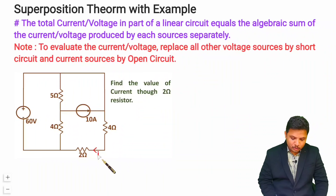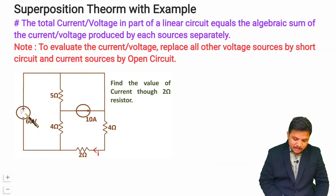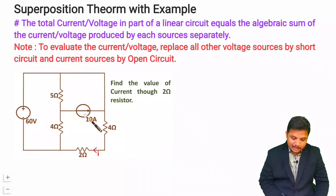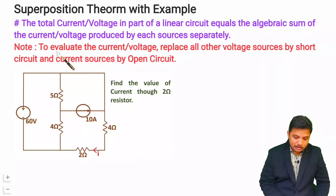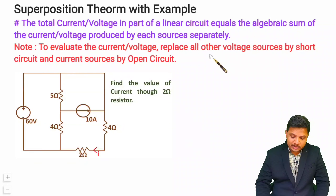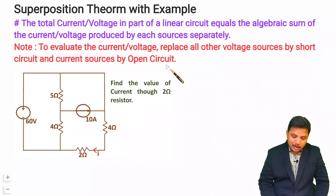We are trying to find the current passing through the 2-ohm resistor. To do this, we find the current through the 2-ohm resistor due to the 60V battery, and also due to the 10A current source. The algebraic sum of both gives the total current through the 2-ohm resistor. One key thing to note: when evaluating each source, replace all other voltage sources with a short circuit and all current sources with an open circuit.